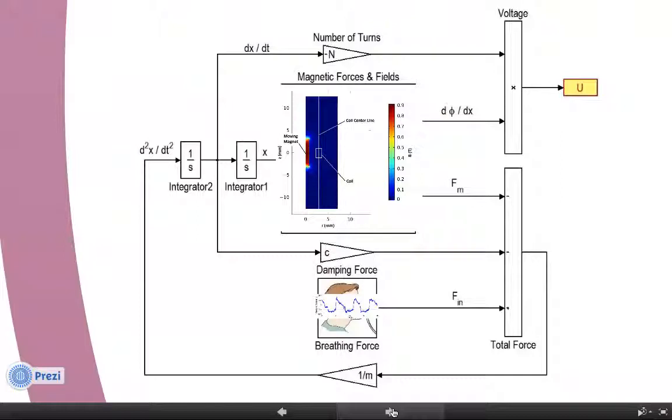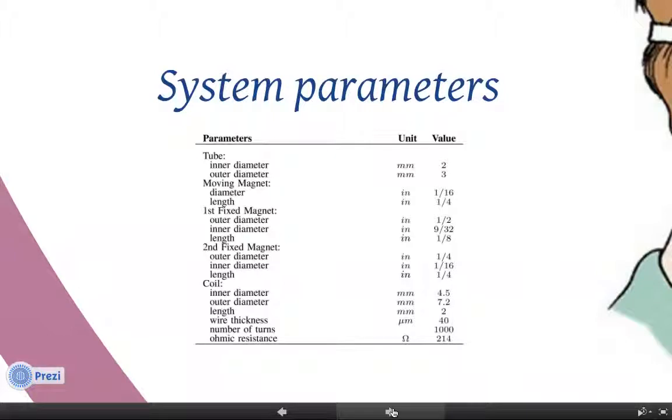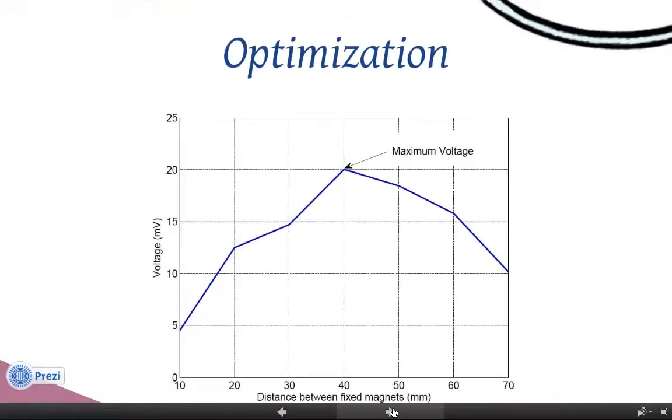We used this simulation setup to find the optimal value for the distance between two fixed magnets. We considered these parameters for the system and assumed that all parameters are constant except the distance between the fixed magnets. By plotting the induced voltage versus the distance between magnets, we apply the optimal point, which occurs when the distance is about 40 millimeters. And at this point, the generated voltage is 20 millivolts.